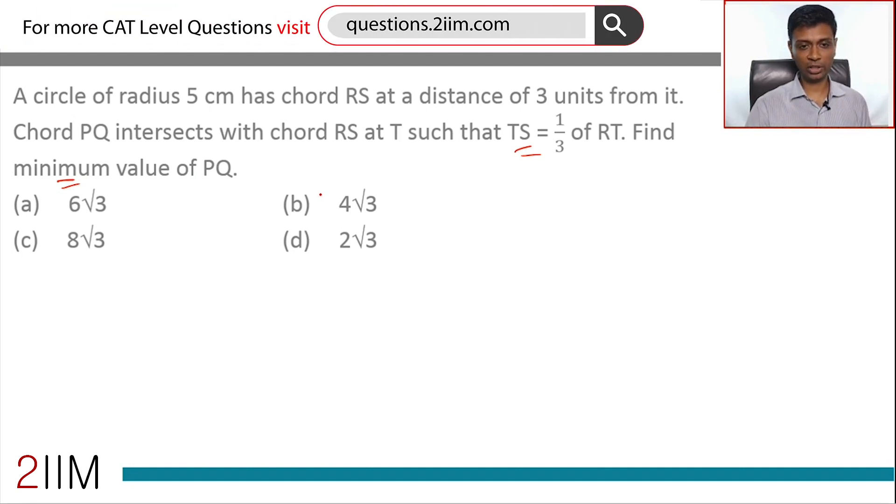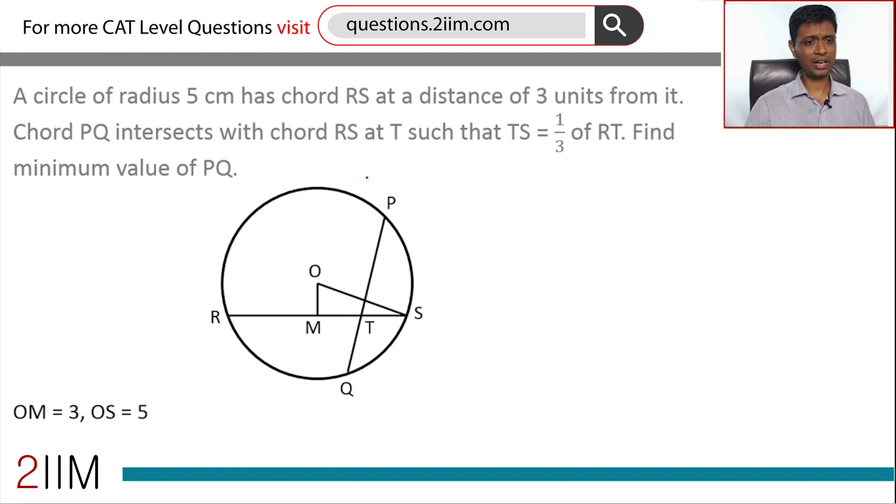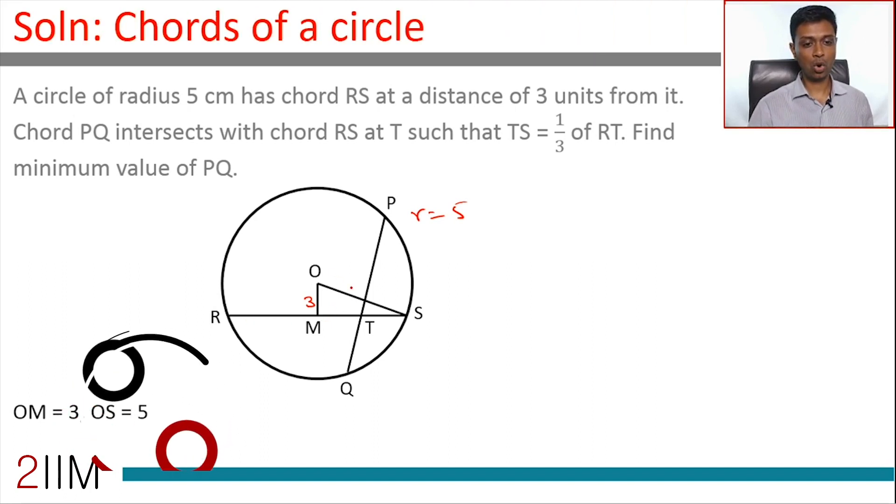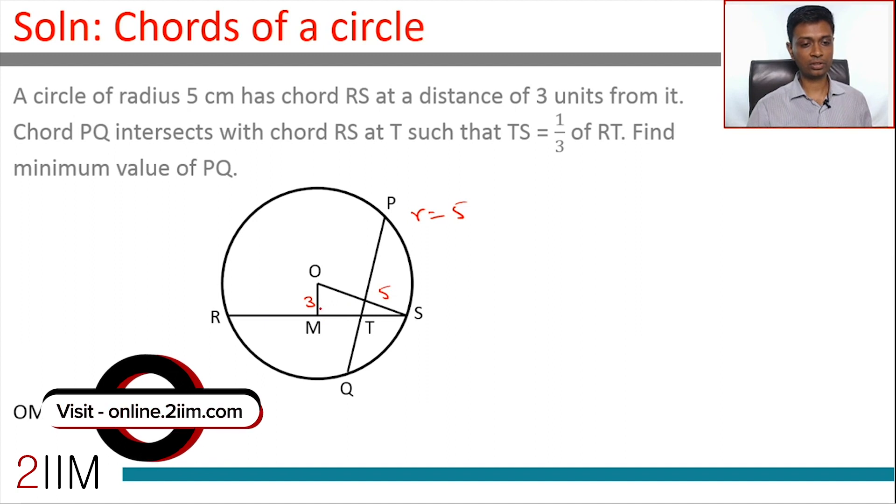Radius is 5 centimeters. Chord RS is at a distance of 3 units from it, so from O if you draw a perpendicular this would be 3. If you draw a line from center of a circle perpendicular to a chord, it will bisect the chord, so RS will get bisected at M.